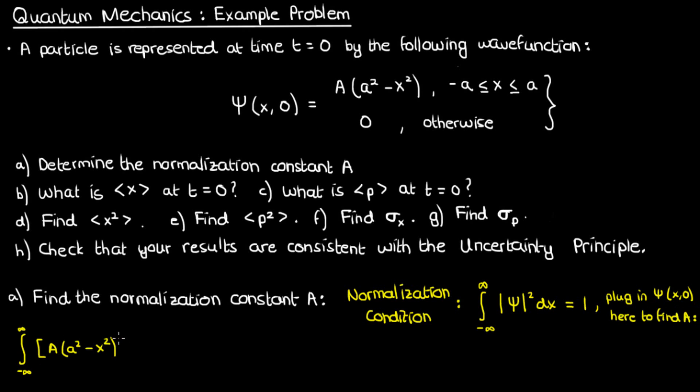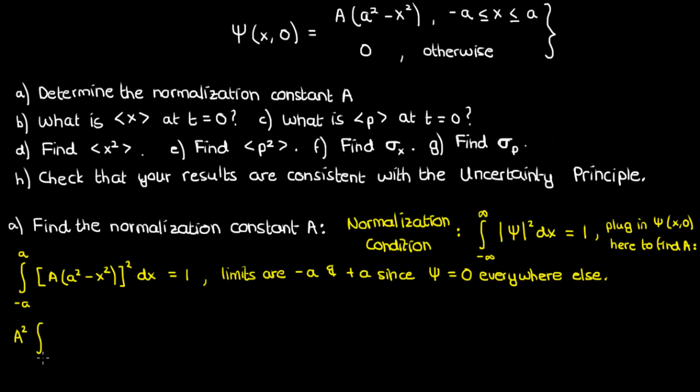So let's plug in our ψ. Now ψ is actually zero everywhere except between -a and a, so we'll change the limits of integration to -a and a because the rest of the domain doesn't matter. Let's expand this and take the normalization constant out of the integral.